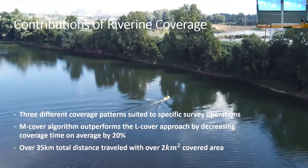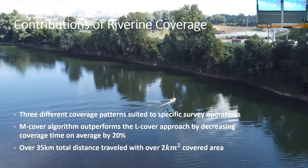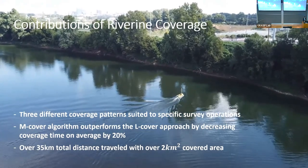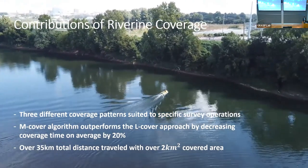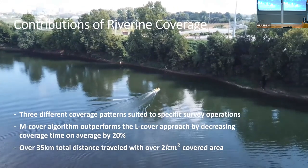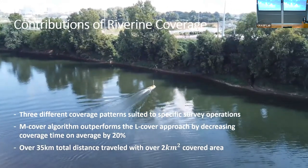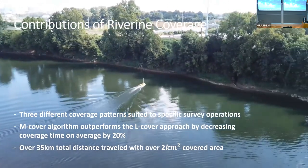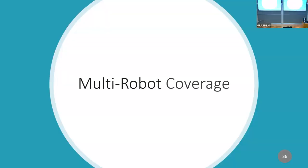In summary, the riverine coverage work provides three different coverage patterns: longitudinal, transversal, and zig-zag. The meander-based coverage algorithm outperforms the longitudinal approach by decreasing coverage time on average by 20%. We performed extensive field experiments with 35 kilometers of total distance traveled, covering over two square kilometers of area.